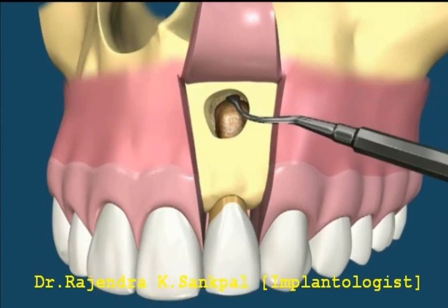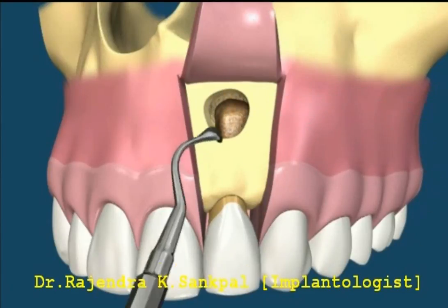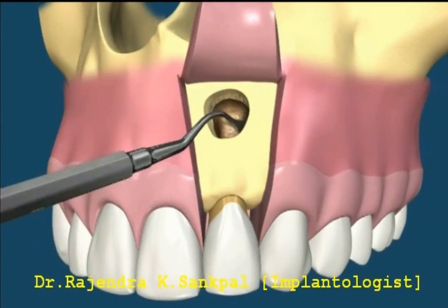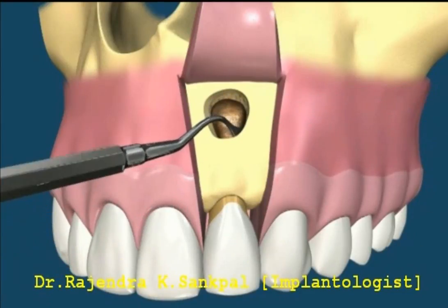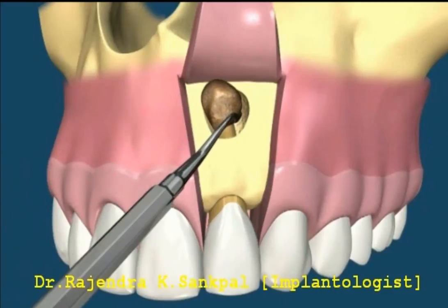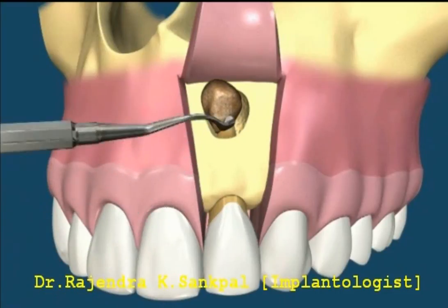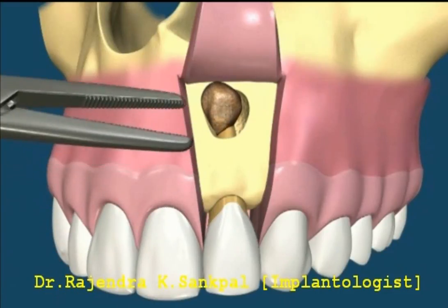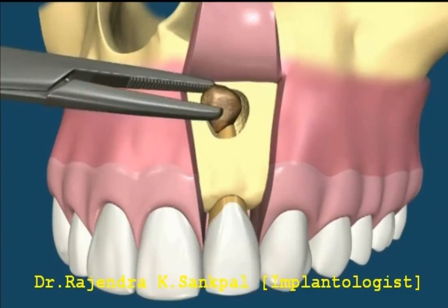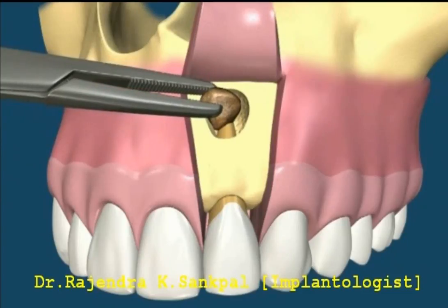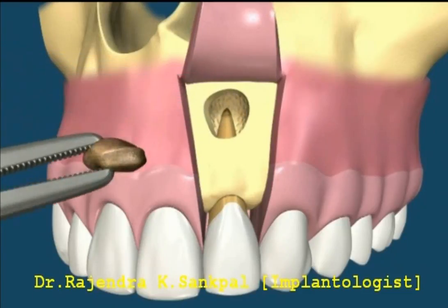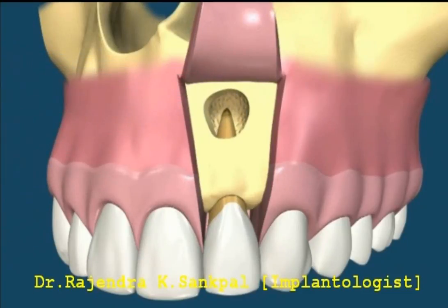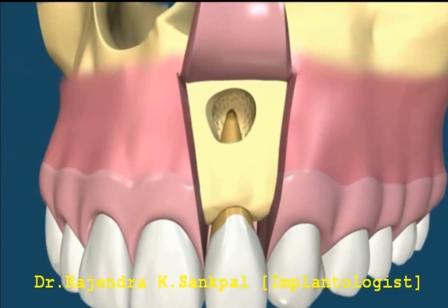The pathology at the tip of the root is then removed. Here we carefully remove a cyst that has formed and grown to significant size. If the size of the area is large, surgical correction is mandatory along with root canal treatment.